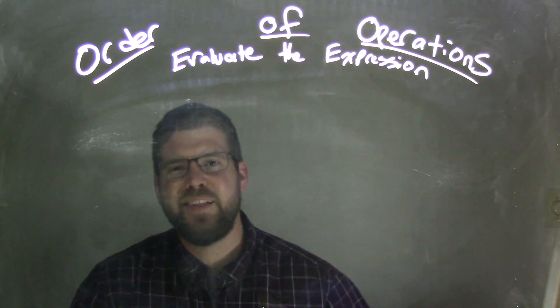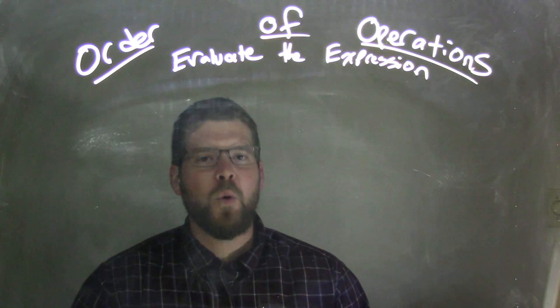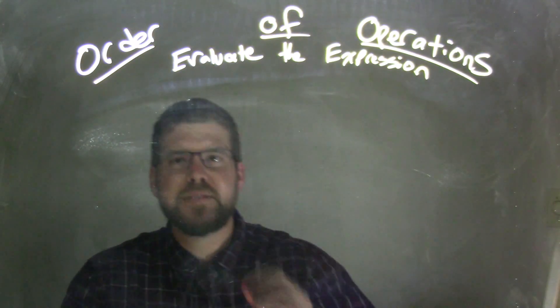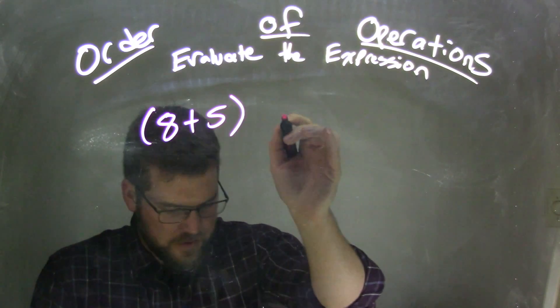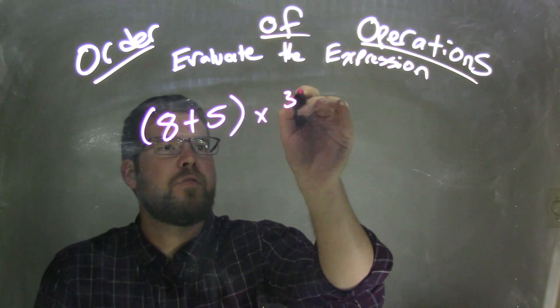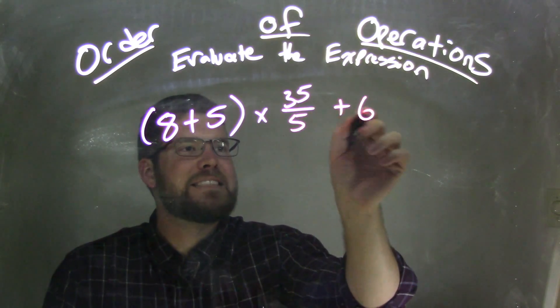Hi, I'm Sean Gannon, and this is Minute Map, and today we're going to learn about the order of operations. If I was given this expression, 8 plus 5 times 35 over 5 plus 6.